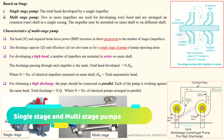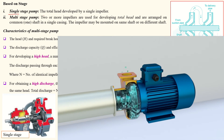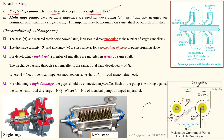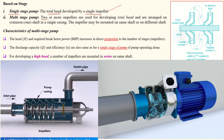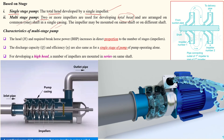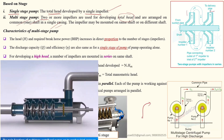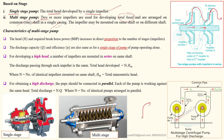The next classification is based on stages: single stage and multi-stage. In a single-stage pump, the total head is developed by a single impeller only — the pump has one impeller and can pump water up to a certain height. In a multi-stage pump, more than two impellers are used to develop the head. These impellers are arranged on a common single shaft. The first impeller pumps water to the next impeller, which pumps to the next, and so on.